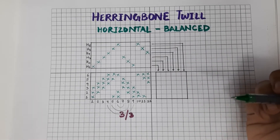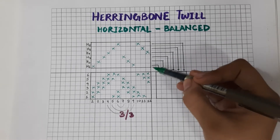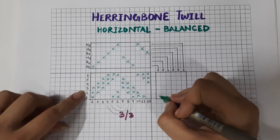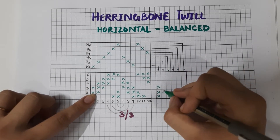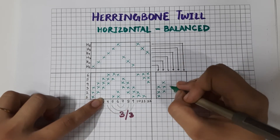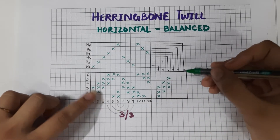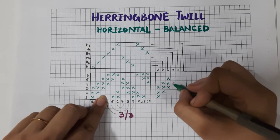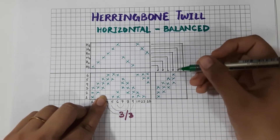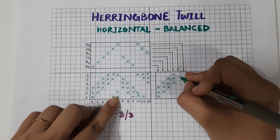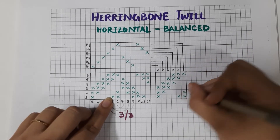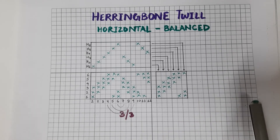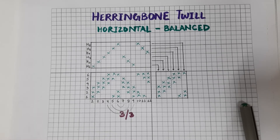Now let us see the lifting plan of the three up, three down herringbone. The first heel frame is lifted for the first, second and third pick. The second heel frame is lifted for the second, third and fourth pick. The third heel frame is lifted for the third, fourth and fifth pick. Basically you make a three up, three down twill for the peg plan — just copy the design up to the sixth. So this is the lifting plan, this is the draft, and the design of a three up, three down herringbone twill. It is a horizontal twill and it is balanced.